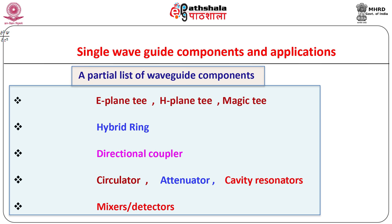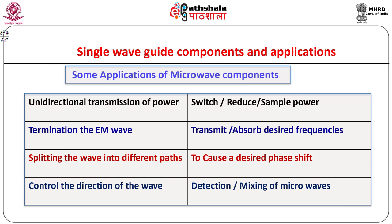A partial list of waveguide components is as shown. In general, microwave components associated with coaxial lines and waveguides are used for several applications, some of which include: unidirectional transmission of power, termination of electromagnetic wave, control the direction of wave, etc.